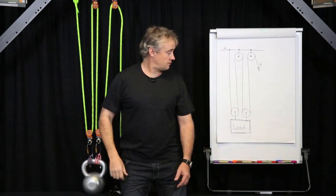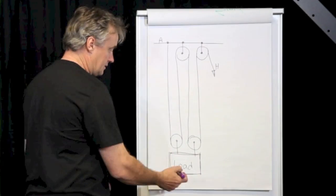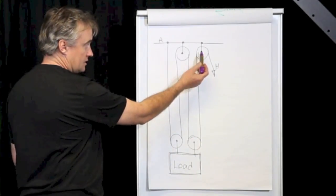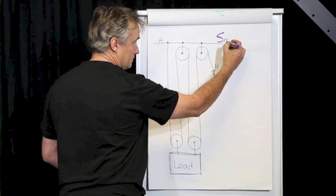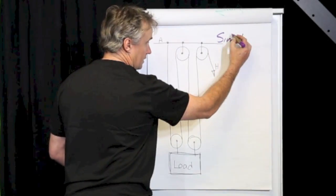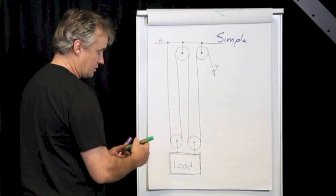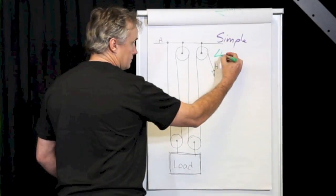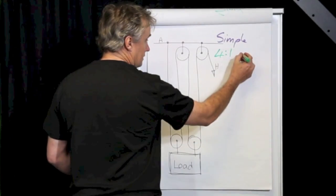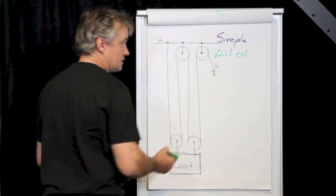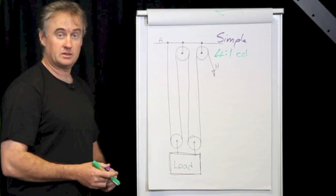Let's have a look on the whiteboard. We've got it drawn up here already — there's our load, travelling pulleys, stationary pulleys, our haul, anchor up the top. So this is a simple mechanical advantage. We've already determined that because there are four strands that support the load it's a 4-to-1. And because we've got that change of direction pulley at the start, it's a 4-to-1 CD, or 4-to-1 change of direction, otherwise known as a 4-to-1 pull to disadvantage.